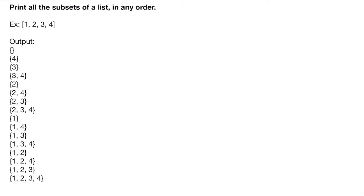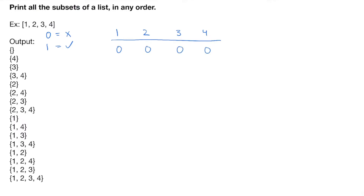To figure out how to generate these subsets, let's list out our elements: 1, 2, 3, and 4. We can recognize that for each element, in any particular subset we're either going to include it or not. So let's say zero means we're not including the element and one means we are. To generate the empty subset, all values are zero — we're not using any elements.